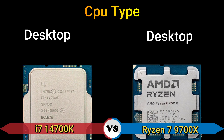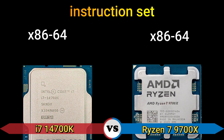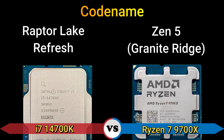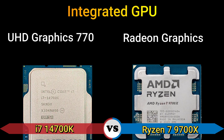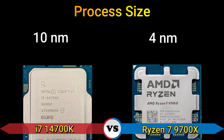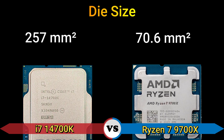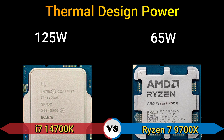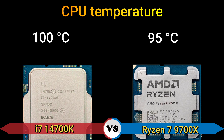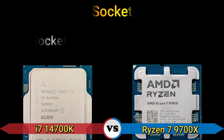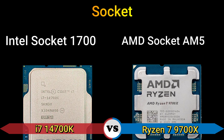CPU type: desktop. Instruction set: x86-64. Code name: Raptor Lake Refresh and Zen 5 Granite Ridge. Integrated GPU: UHD Graphics 770 and Radeon Graphics. Process size: 10 nanometer and 4 nanometer. Die size: 257 mm² and 70.6 mm². Thermal design power: 125 watt and 65 watt. CPU temperature: 100°C and 95°C. Socket: Intel Socket 1700 and AMD Socket AM5.